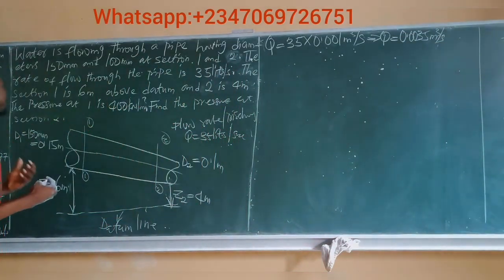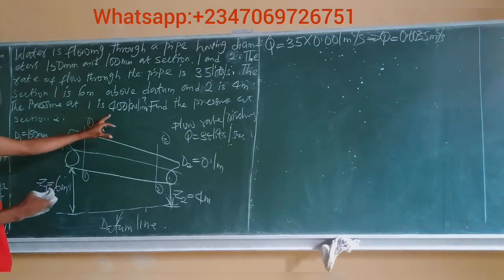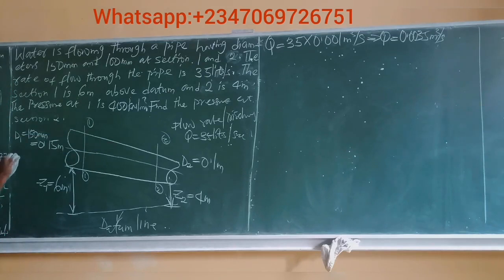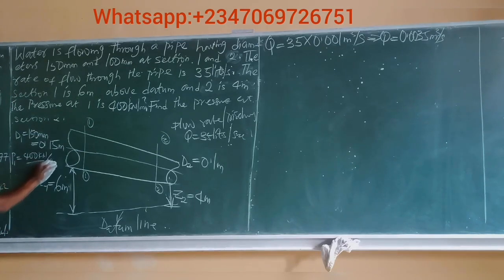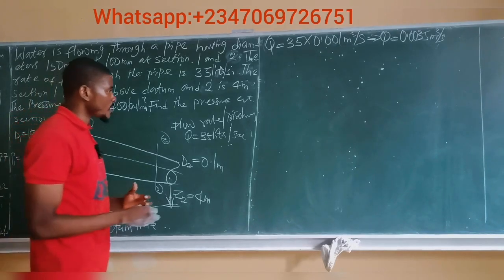We are asked to find the pressure at section 2, given that the pressure at section 1 is 400 kilonewtons per meter square. So P1 is given as 400 kN/m².